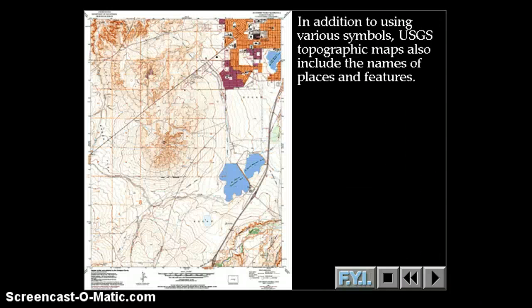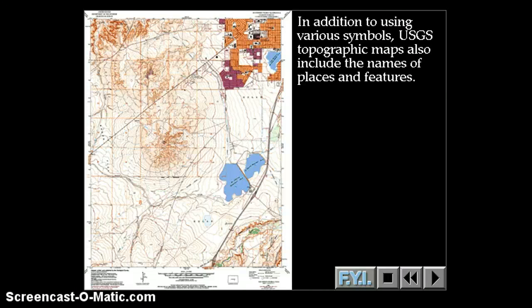So those are some of the basic symbols that are used on topographic maps. USGS topographic maps also include the names of places, hills, valleys, cities, lakes and rivers. Many, many features are named and those names are listed on topographic maps.